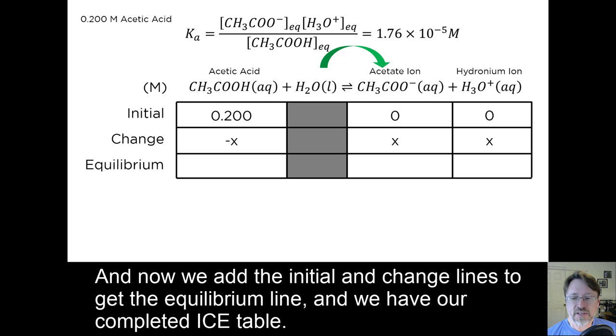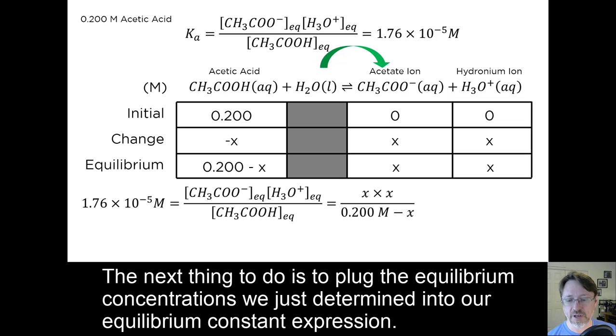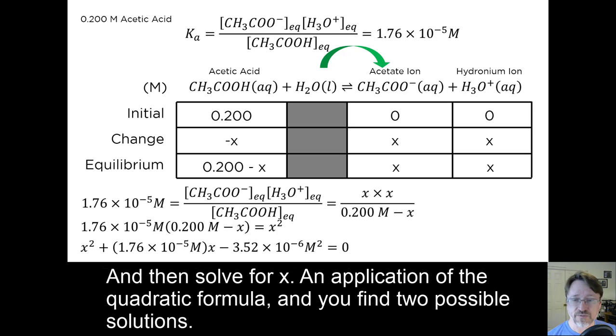And now we add the initial and change lines to get the equilibrium line. And we have completed our ice table. The next thing to do is to plug in the equilibrium concentrations we just determined into our equilibrium constant expression, and then solve for x.